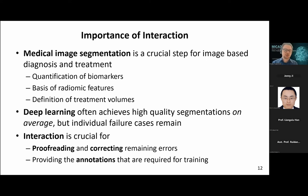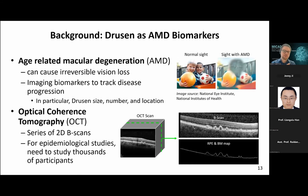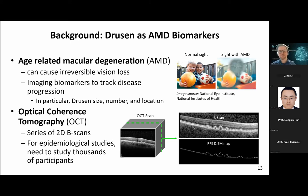Interaction is also crucial for providing suitable annotations for training in the first place, but due to time constraints I'm going to focus on the proofreading aspect. Our collaborators are interested in age-related macular degeneration, which sets in in many people with age.